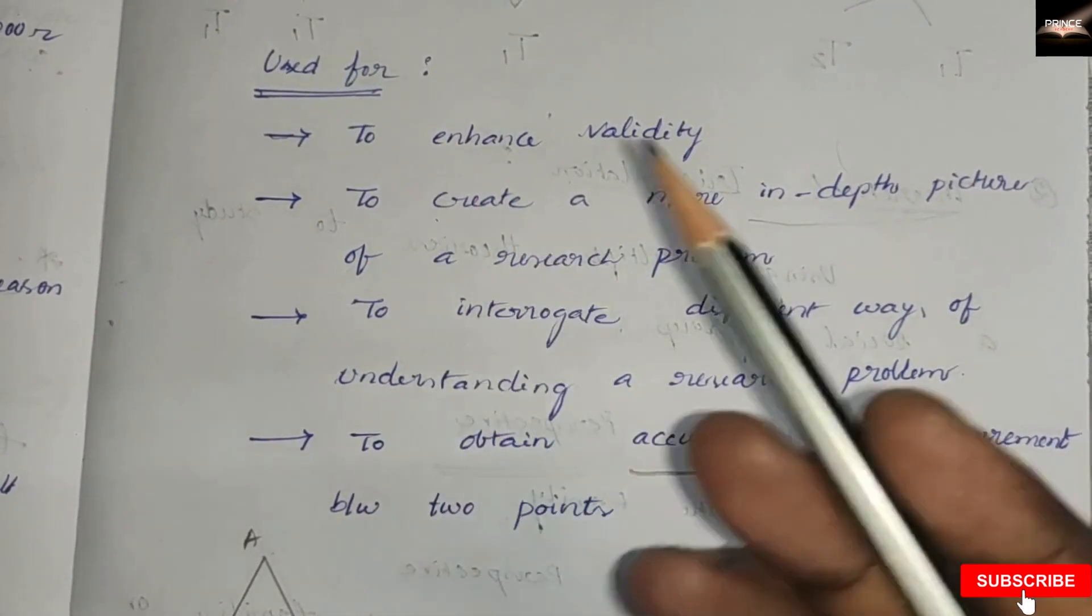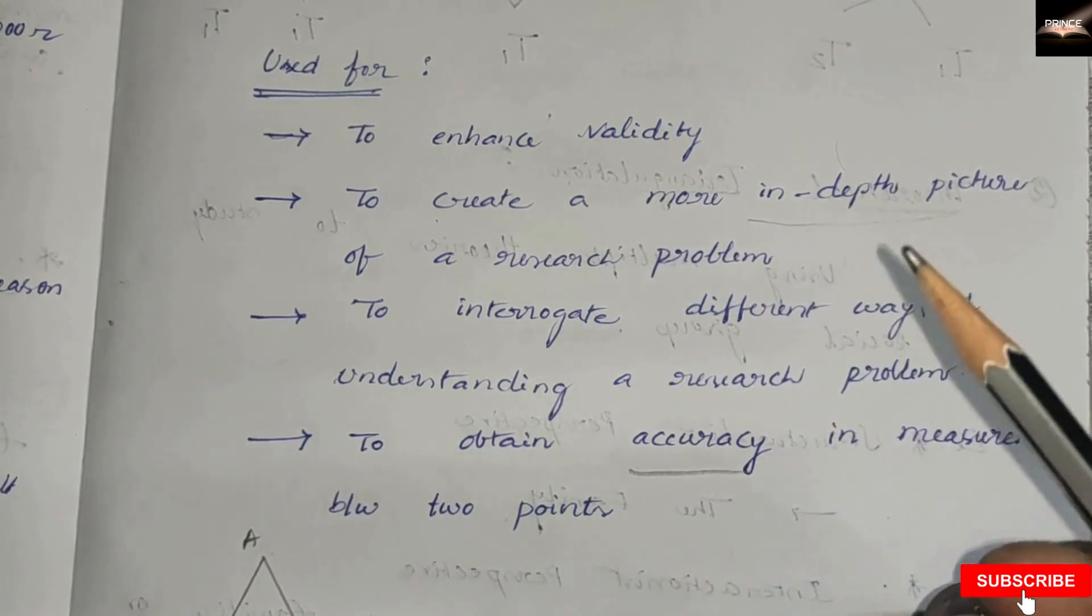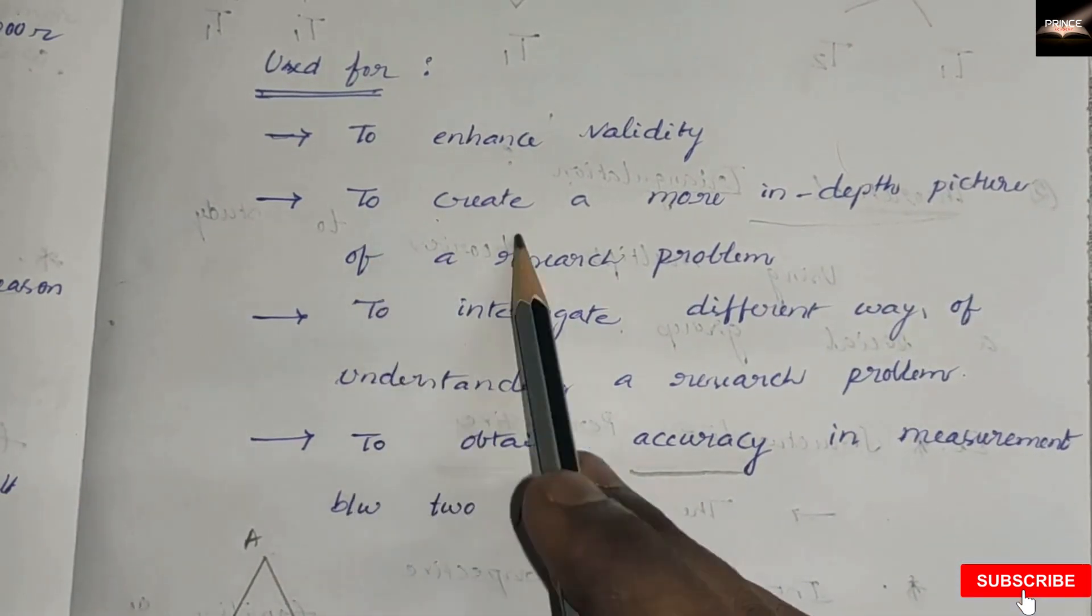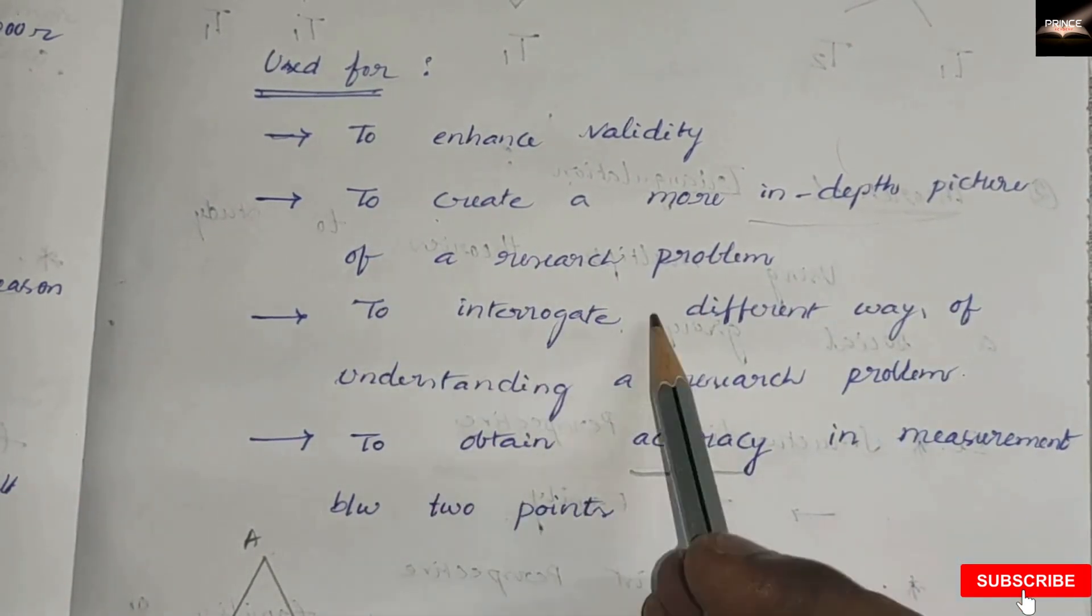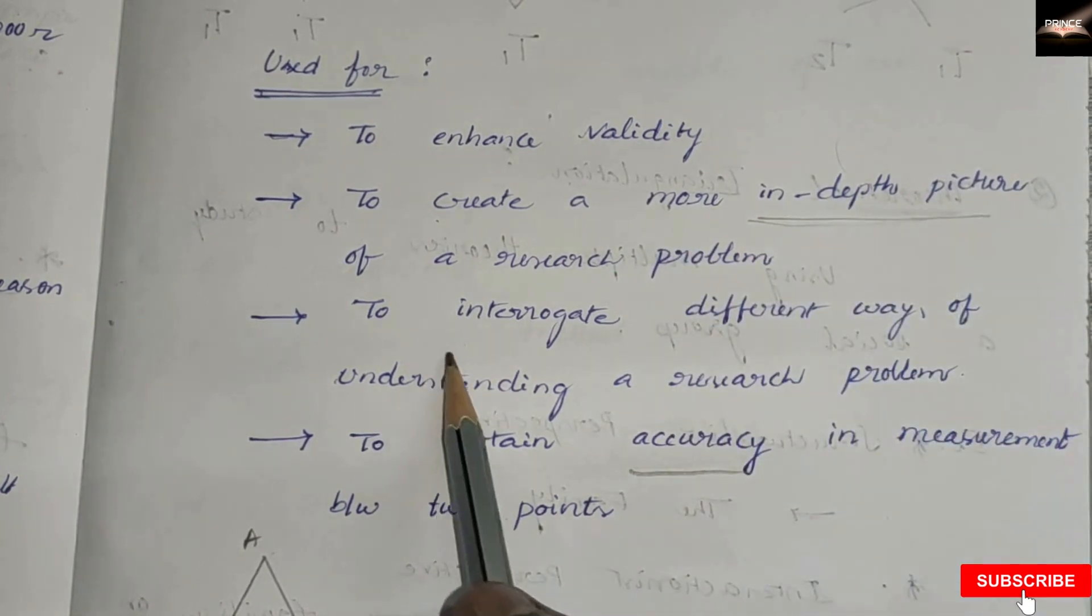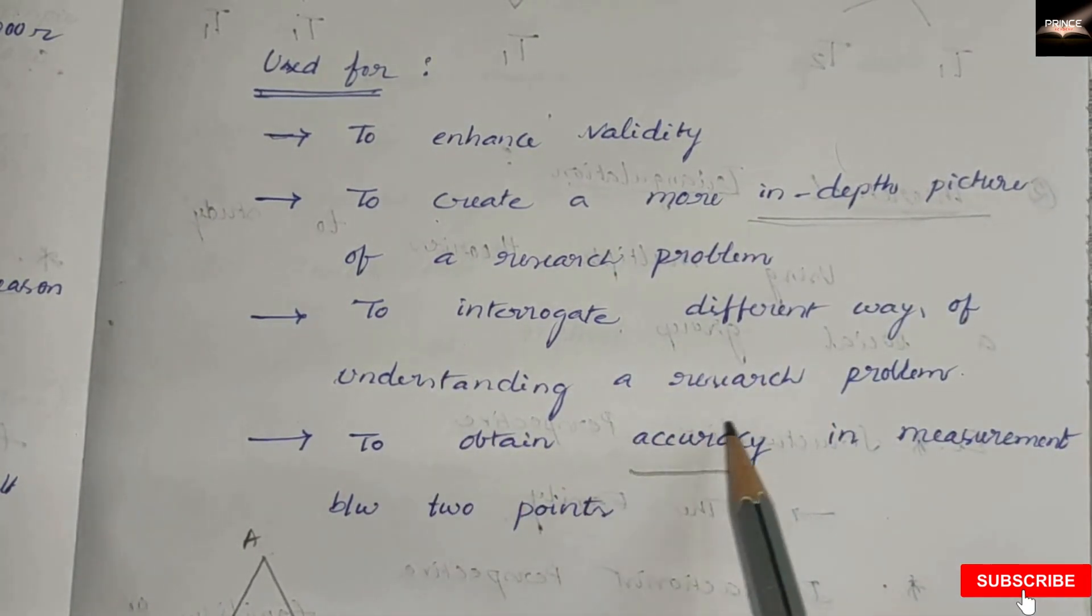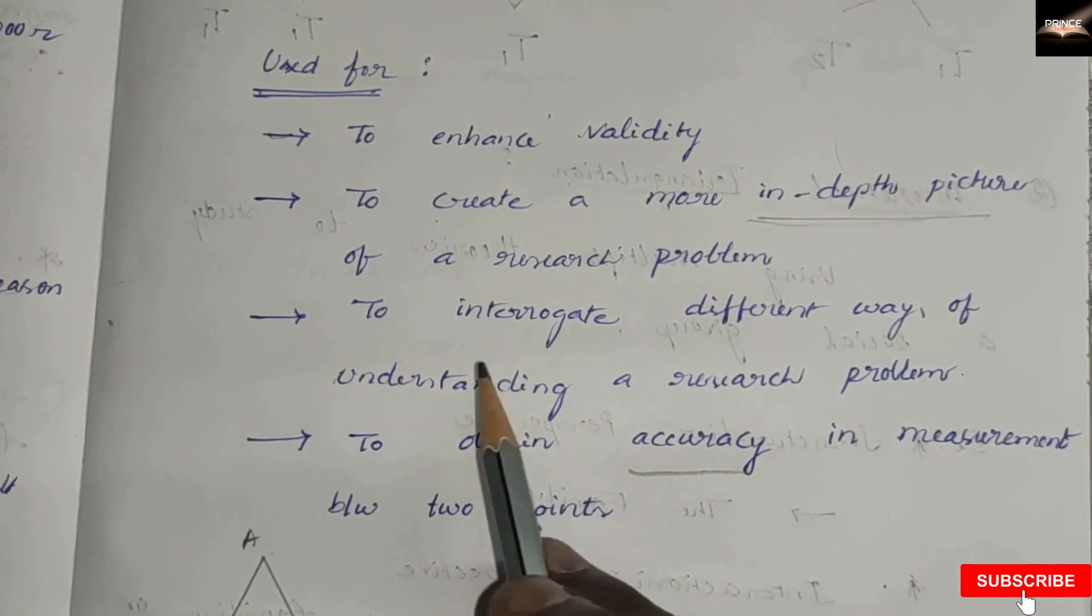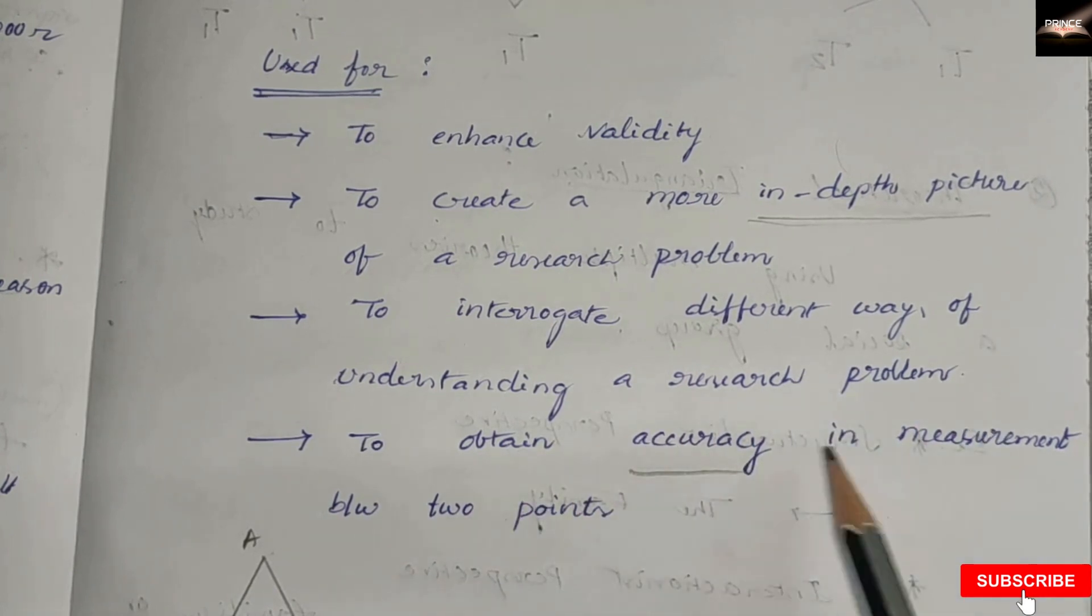Triangulation helps to create valid conclusions, a more in-depth picture of a research problem, to integrate different ways of understanding a research problem, and to obtain accuracy in measurements between two points.